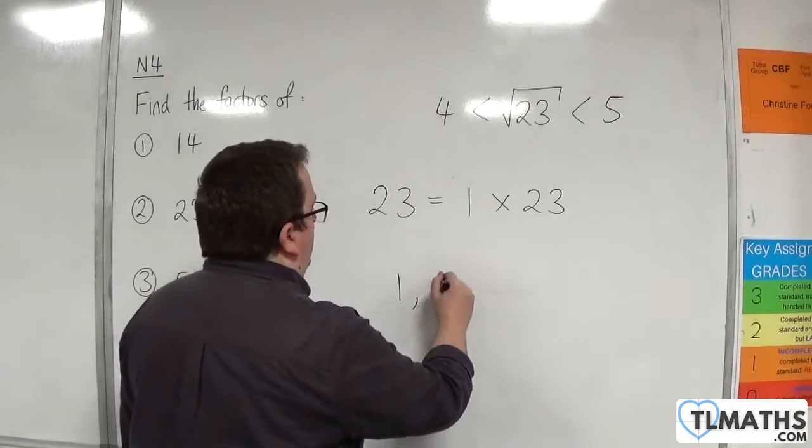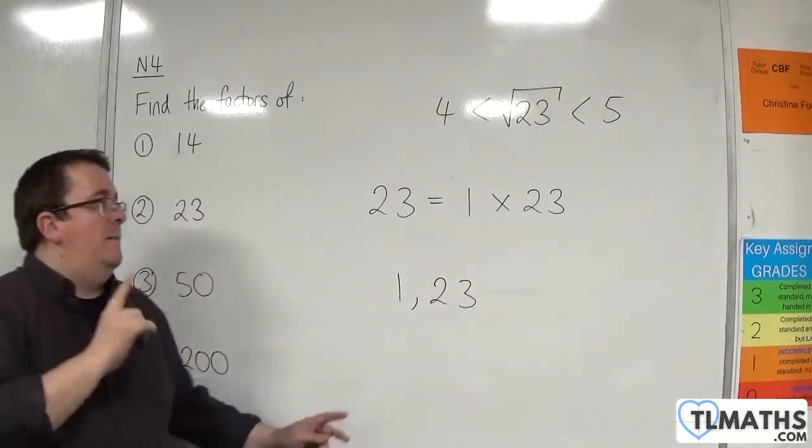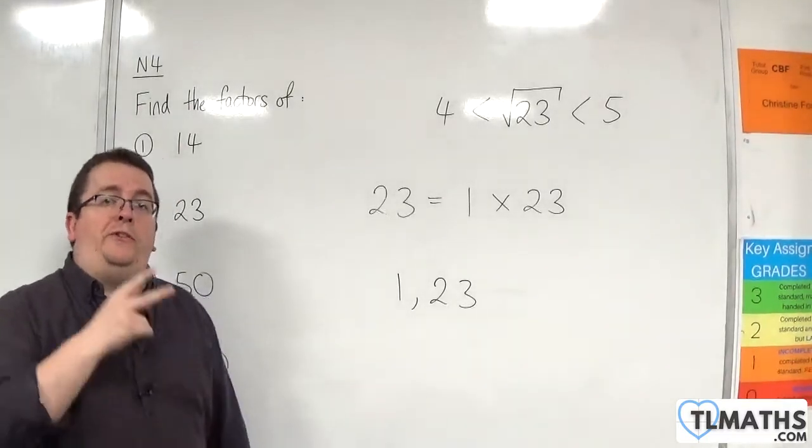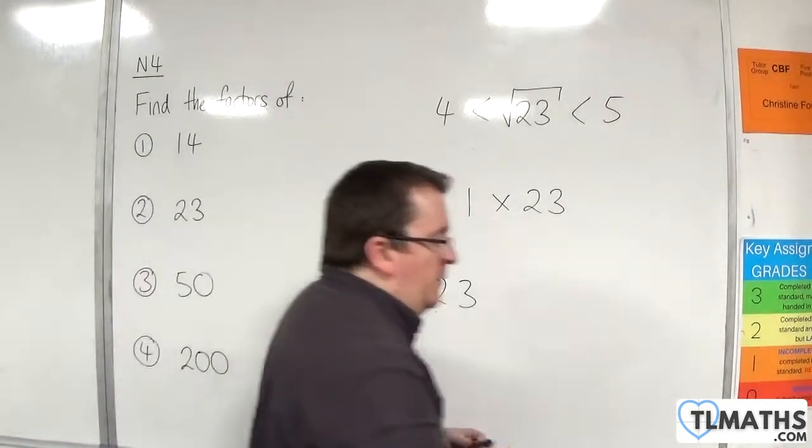And so, the only factors of 23 are 1 and 23. That means, as we will find out very shortly, that 23 is a prime number, because it has precisely two factors.